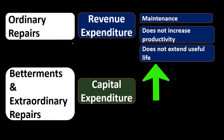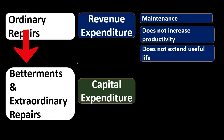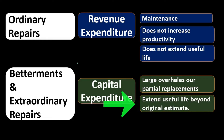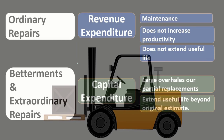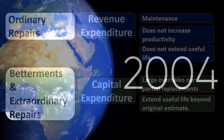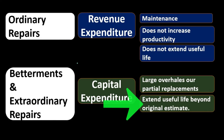On the other hand, betterments and extraordinary repairs are capitalized. This includes things like a large overhaul — for example, putting a whole new engine into the forklift, which would extend the useful life. If an expenditure extends the useful life beyond the original estimate, that's typically a sign it should be capitalized, because the original estimate assumed normal maintenance would sustain the asset for a certain number of years.